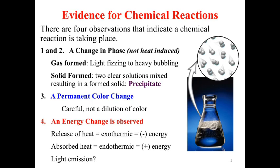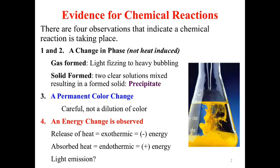The other big one is permanent color changes. If we look at an image, you can see a yellow solid forming — the liquids were both clear. That's a permanent color change. One thing to be careful of is a dilution of color. If I took white cake frosting and added red food coloring and mixed it in, that's a color change, but it's not a chemical change. It's a physical change.